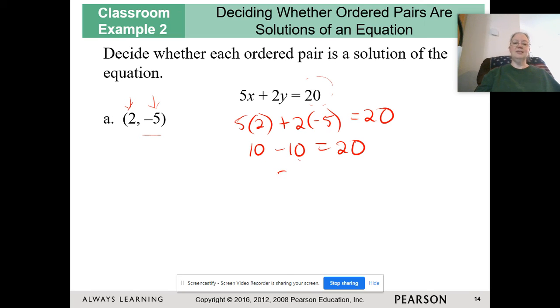I still have two numbers on the left-hand side, so I'm going to continue to simplify. 10 minus 10 is 0. Now that I have a single number on the left and a single number on the right, then I check to see if they are equal to each other. You know that 0 is not equal to 20, so therefore this is not going to be a solution.